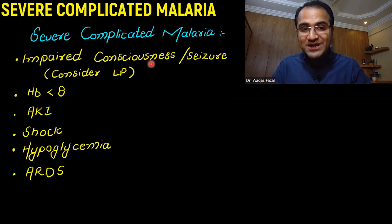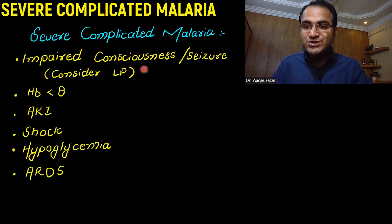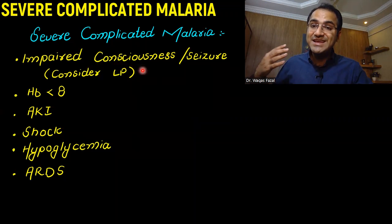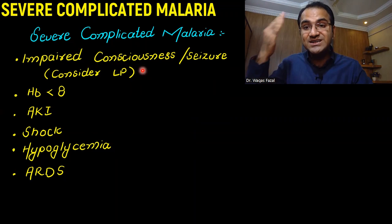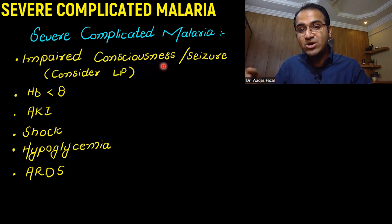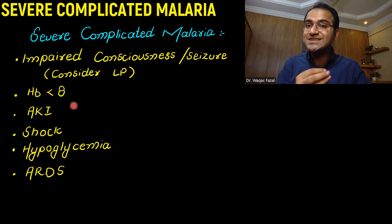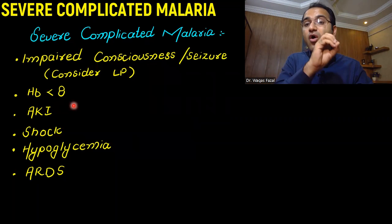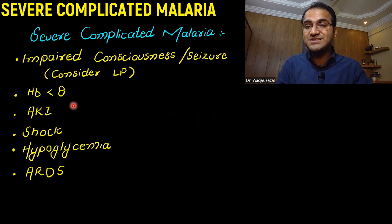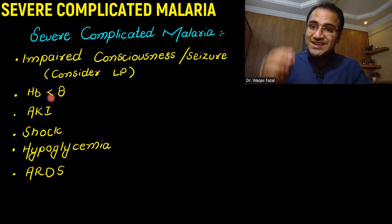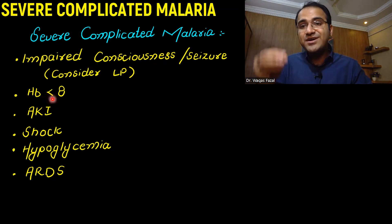Malaria is said to be severe complicated if there is impaired consciousness. It means that falciparum malaria has now entered the brain and become cerebral malaria. The patient is developing seizures and impaired consciousness, and you should consider lumbar puncture in that case. Hemoglobin less than 8 is another criterion. Malaria proliferates in the red blood cells causing their destruction and rupture, leading to hemolytic anemia. If HB is less than 8, it means there is severe damage to the RBCs — that is severe complicated malaria.